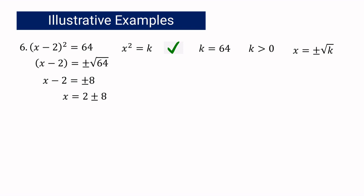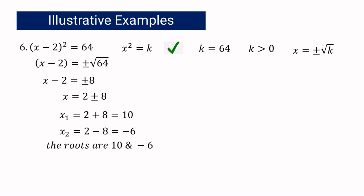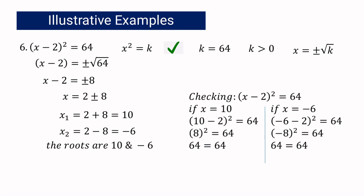Using the addition property of equality, we add 2 to both sides, combining positive 8 and negative 8 with 2. The first value of x is 2 plus 8, which equals 10. The second value of x is 2 minus 8, which equals negative 6. Therefore, the roots or solutions are 10 and negative 6.